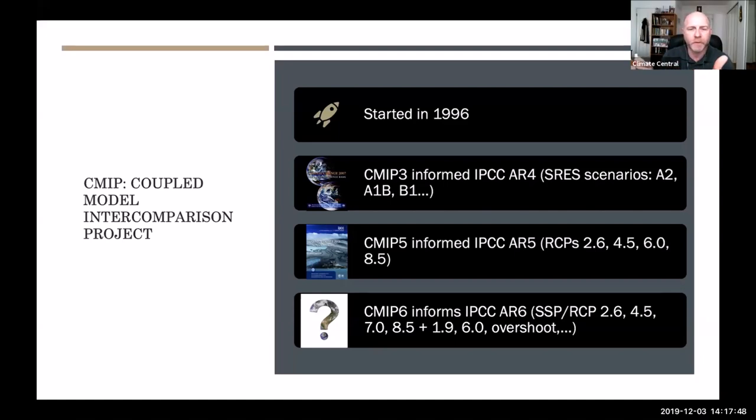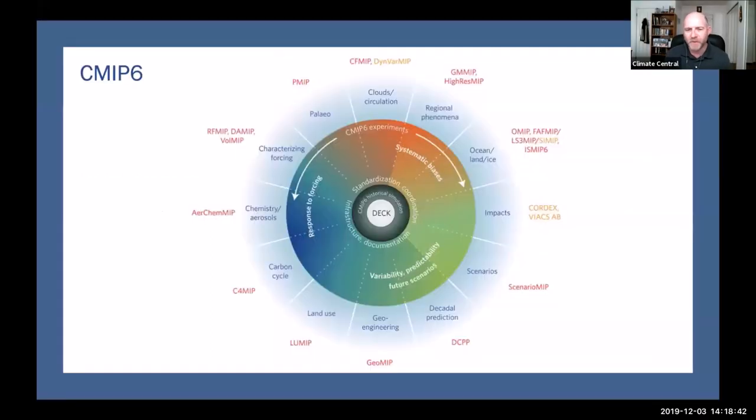So you said there's about 40 models at 30 different centers around the world. And 40 models because the same research center may have different versions. They may have different resolutions. They may have a version that includes the biogeochemistry and another that doesn't. One that resolves the stratosphere and another that doesn't. So there are multiple models coming out of some of the largest research centers. NCAR, for example, I think has three or four models that participate in CMIP.